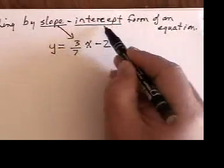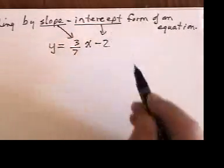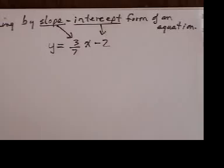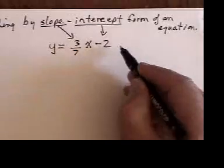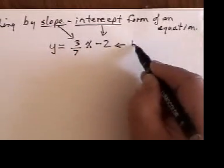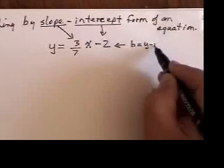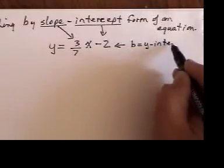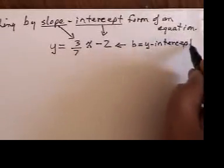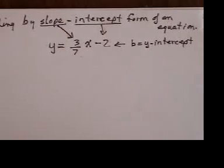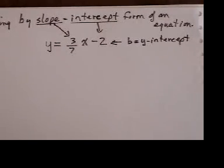Now, it just so happens that this other number here is one of the two intercepts of your line. In this case, we call it B and that stands for the Y-intercept of the line. The Y-intercept of the line is negative 2.